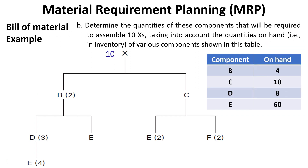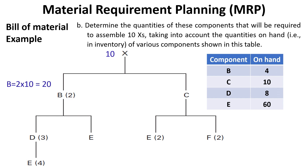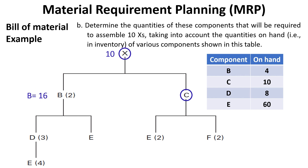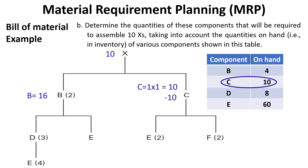Going to the second question, to determine the quantities of these components required to assemble ten X's, taking into account the quantities on hand: in the first level, two B's are required to assemble one X, so to assemble ten X's, B equals two multiplied by ten equals twenty. But four B's are on hand, so these four have to be subtracted from twenty, resulting in sixteen B's. At the same level, one C is required to produce one X, so to assemble ten X's, C equals one multiplied by ten equals ten. But ten C's are on hand, so these ten have to be subtracted from ten, resulting in zero C's.